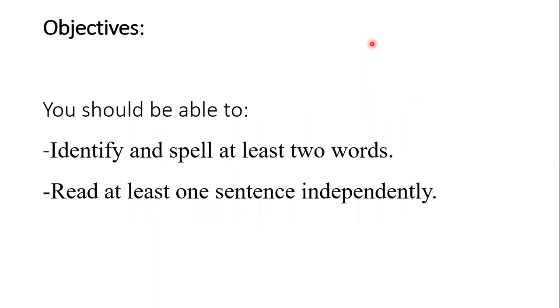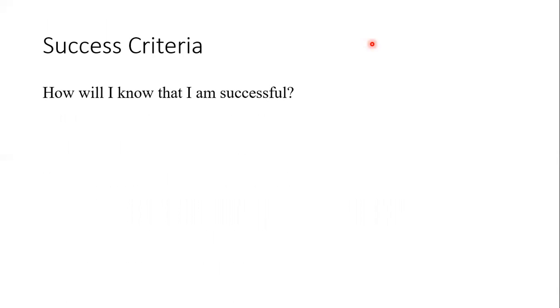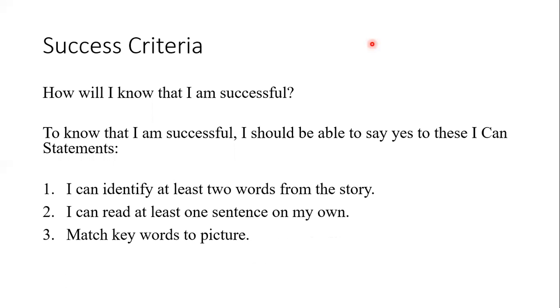Objective: you should be able to identify and spell at least two words, and read at least one sentence. Materials needed: a pencil and a writing book. Success criteria — how will I know that I am successful? I should be able to say yes to these I can statements: I can identify at least two words from the story, I can read at least one sentence on my own, and match key words to pictures.